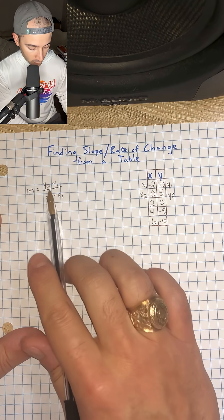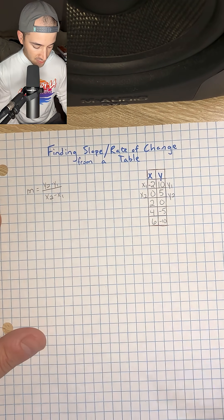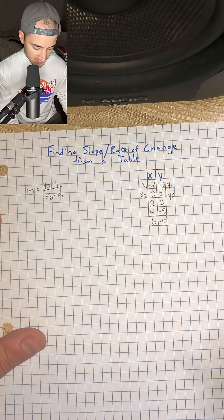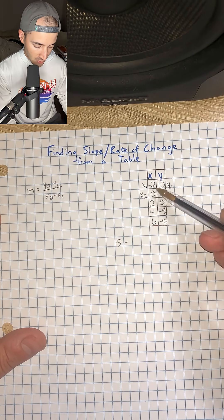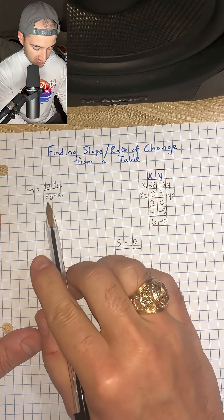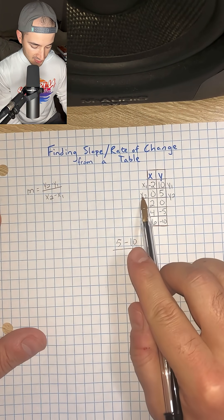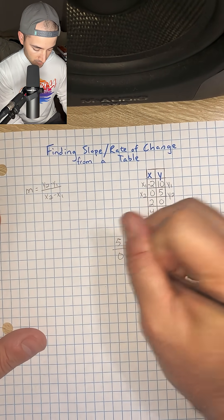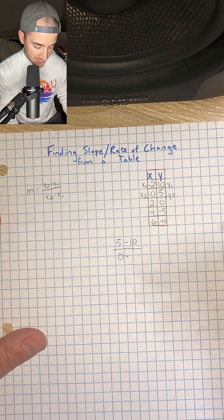So our formula is y2 minus y1. So we're going to start with y2, which is 5, minus y1, which is 10, over x2 minus x1. So x2 is 0, minus x1 is negative 2.